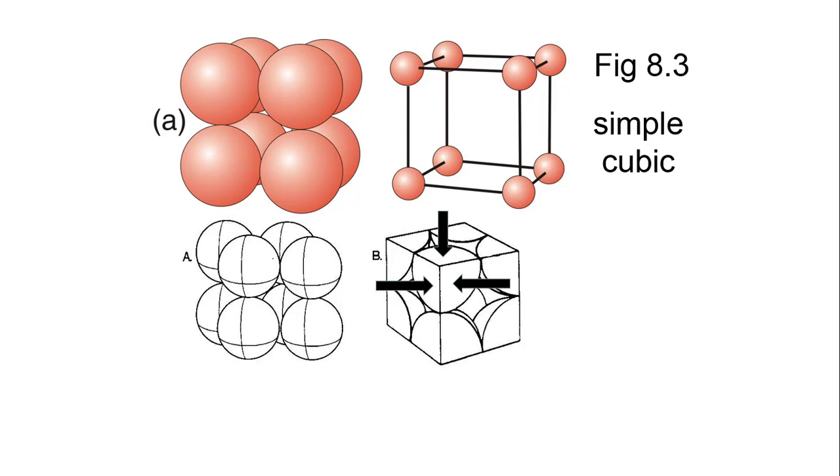What remains is half of a half of a half, or one-eighth of an atom. Since there are eight atoms, each contributing one-eighth to the simple cubic unit cell, there is a total of one atom inside, as defined by the nuclei.